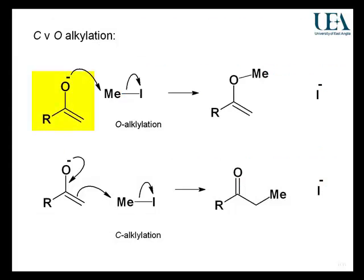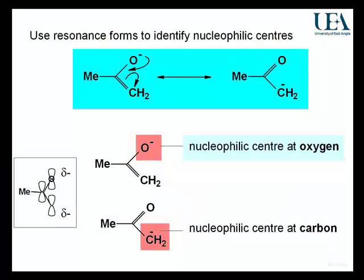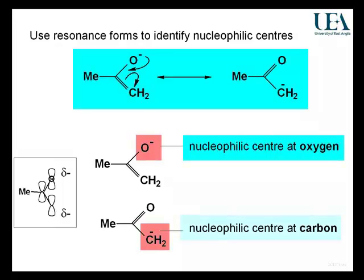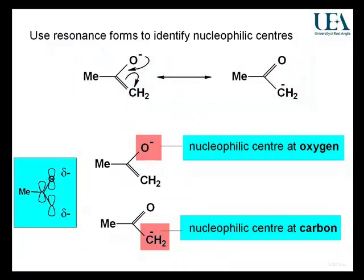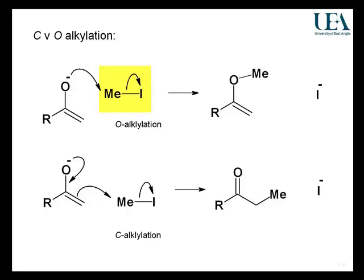In a simple enolate with a simple electrophile, there are two centres of reactivity. The resonance analysis indicates that there is an oxygen nucleophilic centre and a carbon nucleophilic centre. So we have a competition between two nucleophilic centres, and they're going to react with electrophiles.